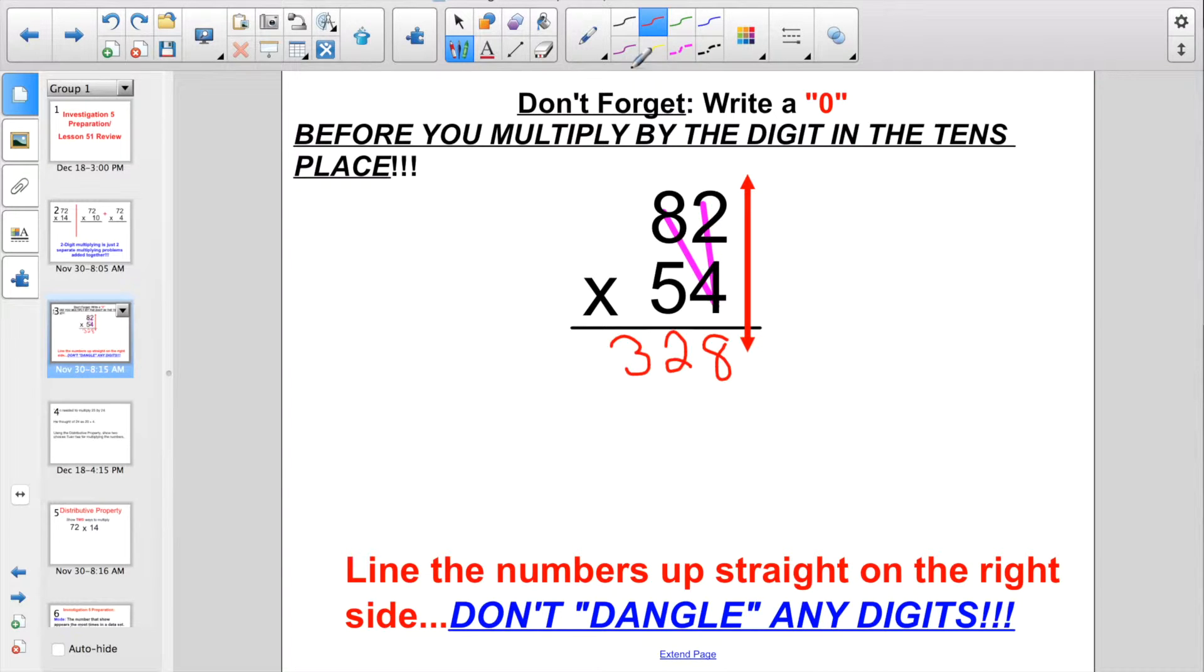So we have 328 for our first answer. Before we start multiplying again, make sure you always write in a 0, because when we start multiplying by this 5, he's not really 5, he's 50. So we're done multiplying by that 4. If you want to cross them out, feel free to go ahead. Now that we have our 0 written in, we just have to think of this as 82 times 5. But the big thing, you need to keep your rows of numbers nice, neat, and straight for when we add the two answers together.